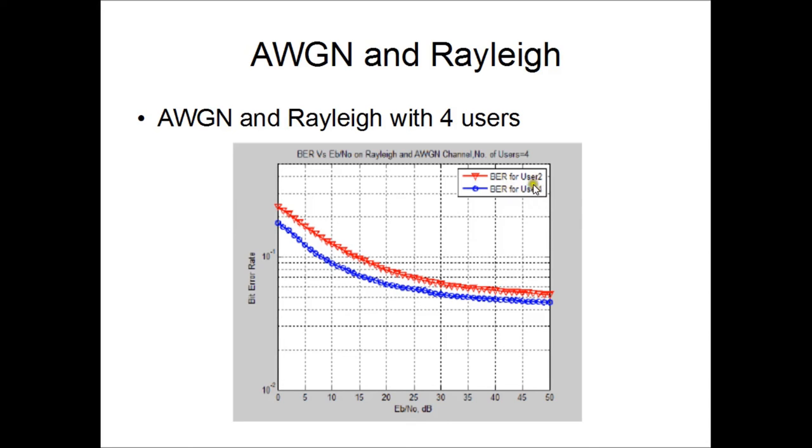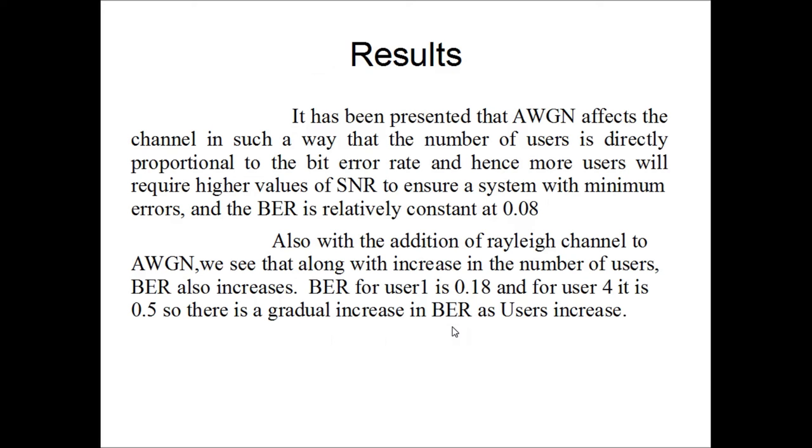As we have seen here, the number of bit error rate for user 2 and user 4. This red line signifies 2 and this one signifies 4. As the number of users are increased, the bit error rate is increased. This can be confirmed from the simulation program we have done earlier.